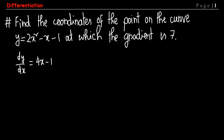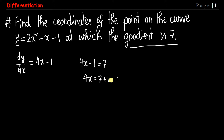dy/dx is called the gradient expression, and the gradient value is given as 7. So we set 4x minus 1 equals 7. By using this equation, we get the value of x: 4x equals 7 plus 1.